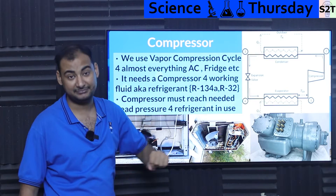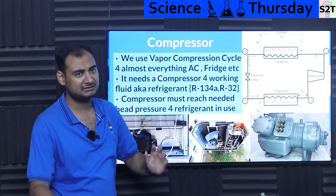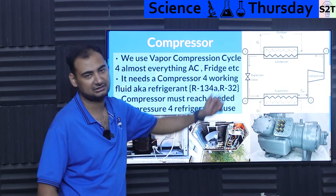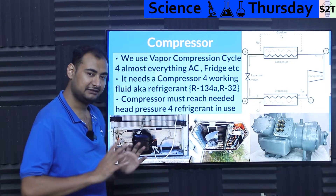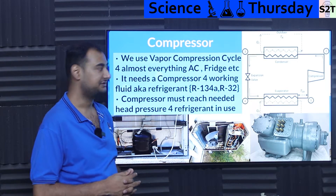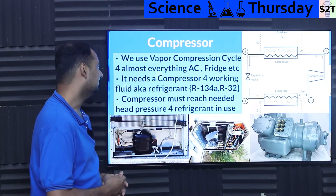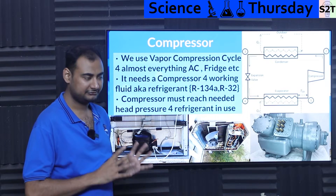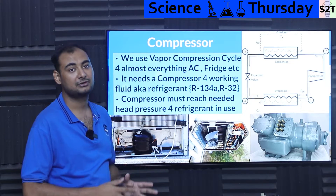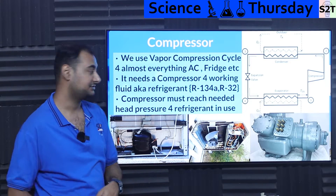Everything else can be passive — sometimes you may have an electrical expansion valve, but everything else would be passive. So the compressor is the core component of the vapor compression system.